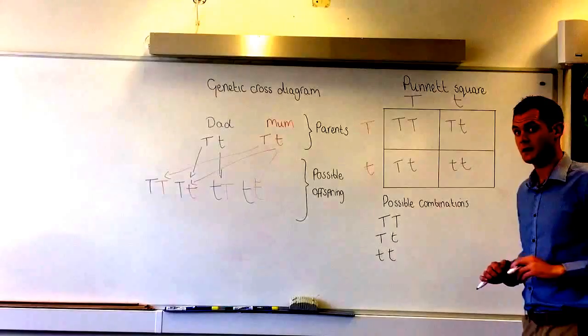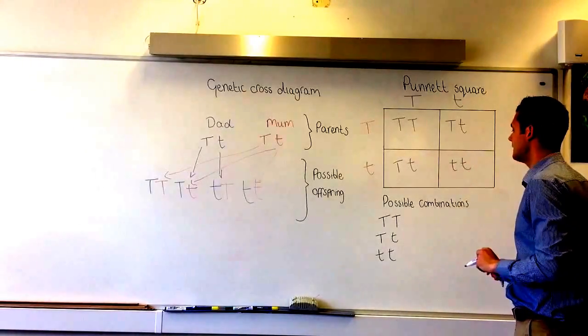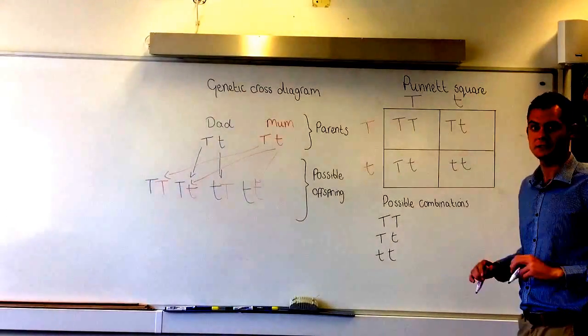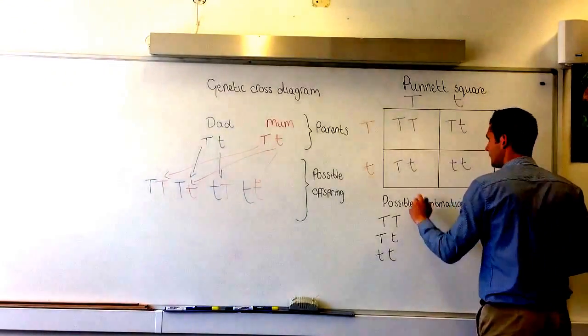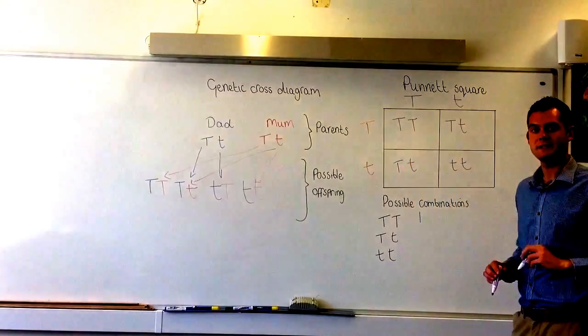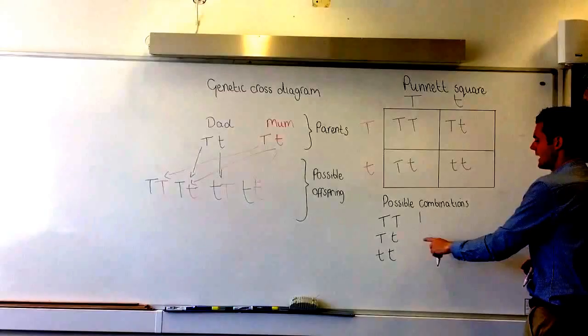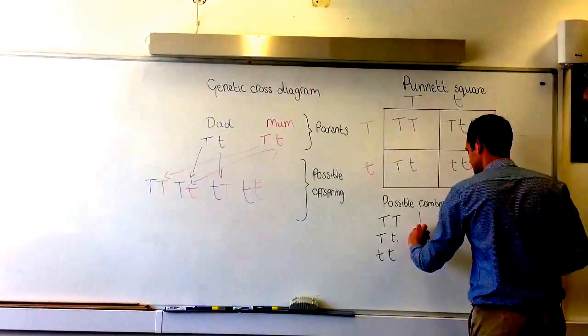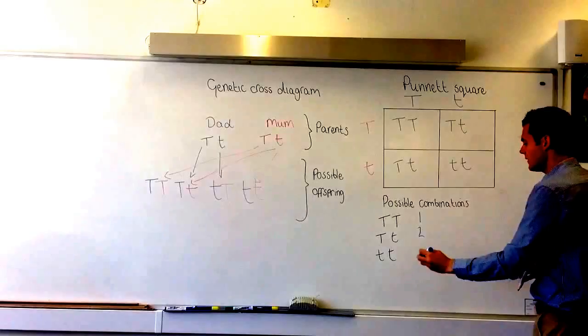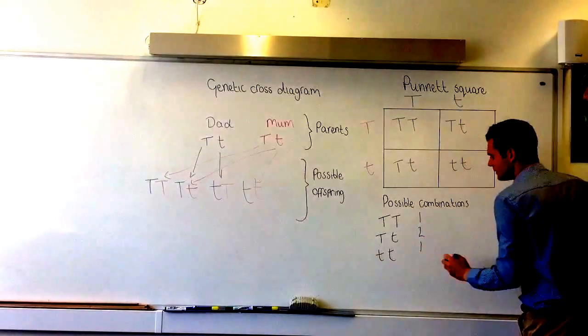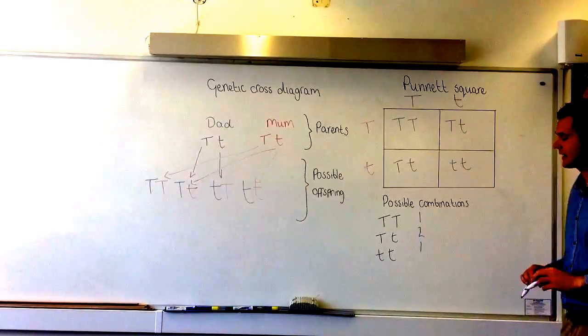From both the genetic cross diagram and the Punnett square, let's look at the possible combinations. We have one dominant T, dominant T combination. We have two dominant T recessive t combinations, and finally we have one double recessive lowercase t combination.